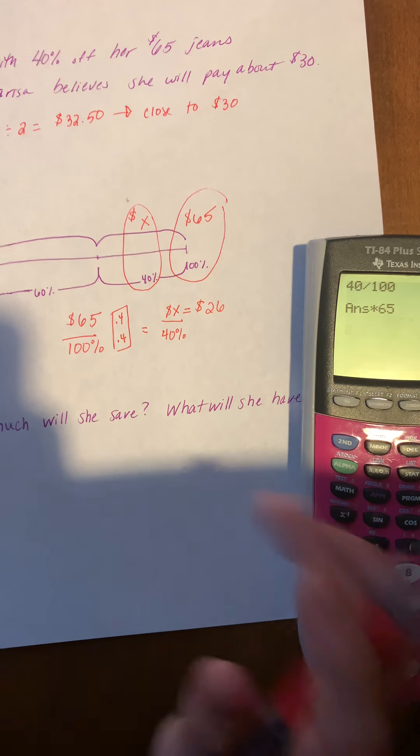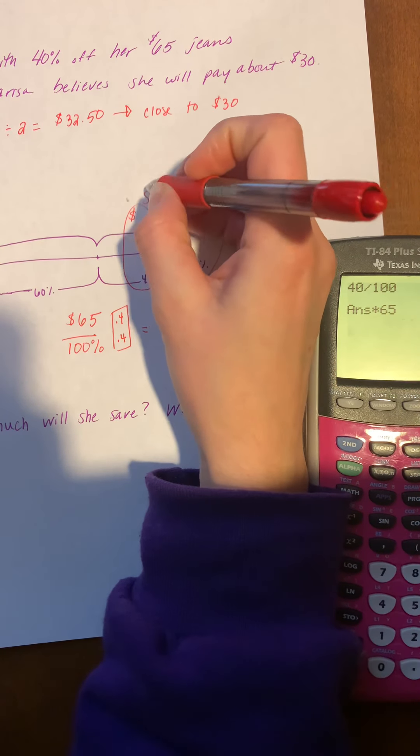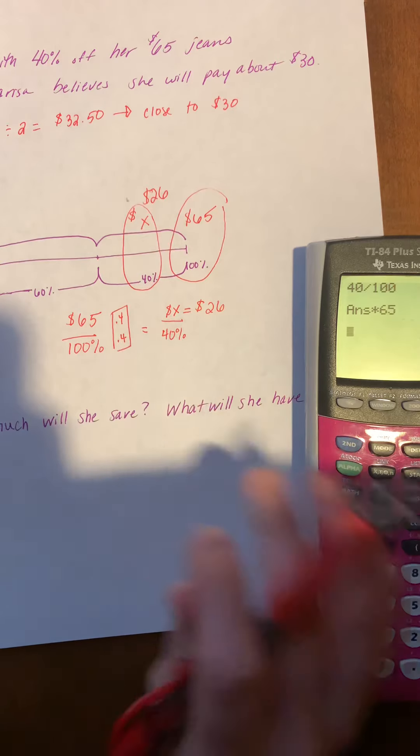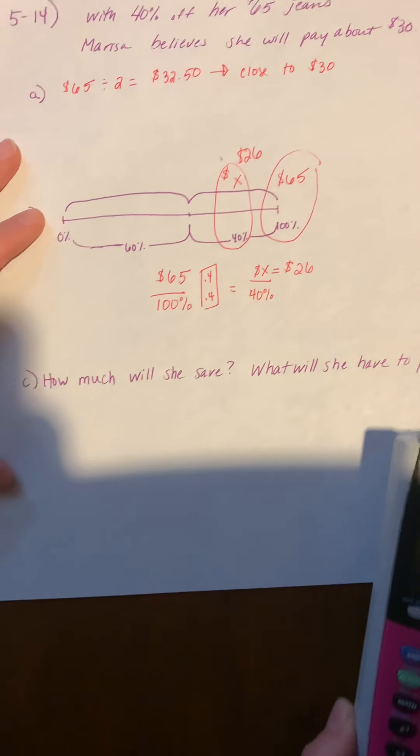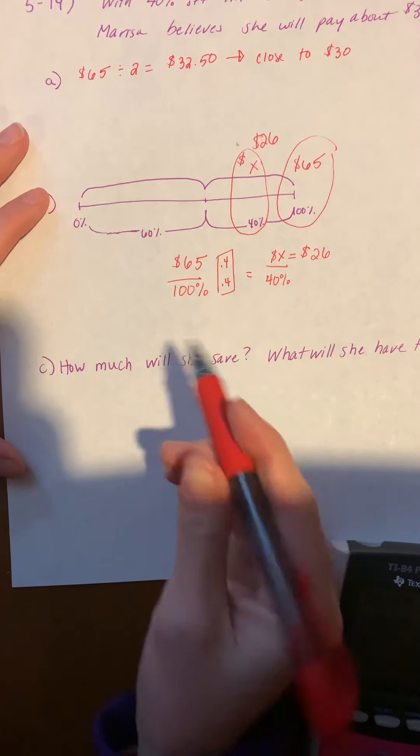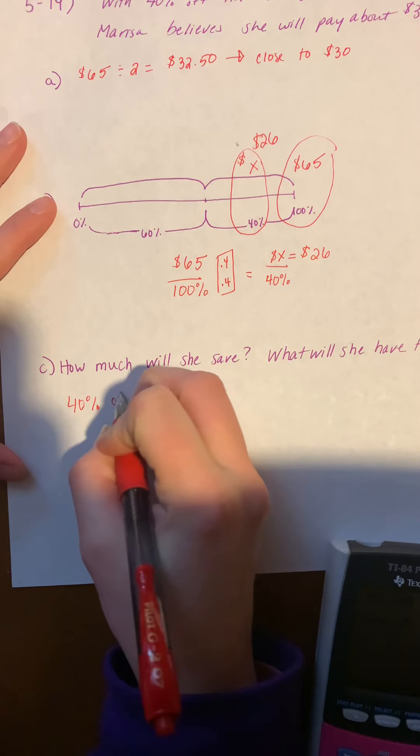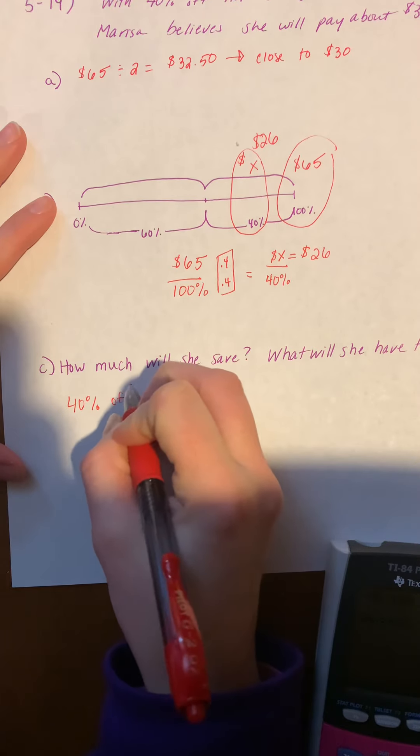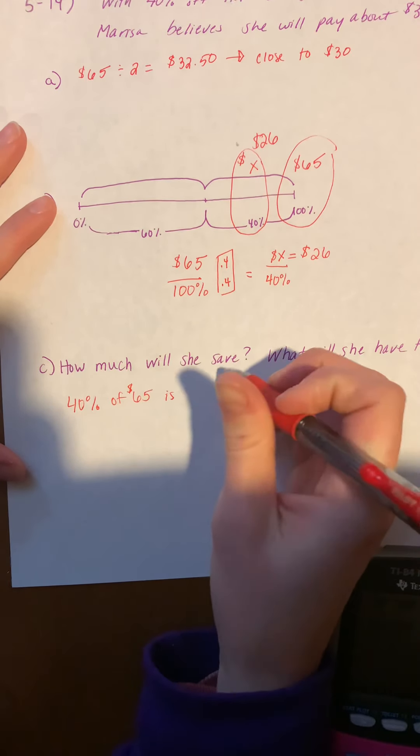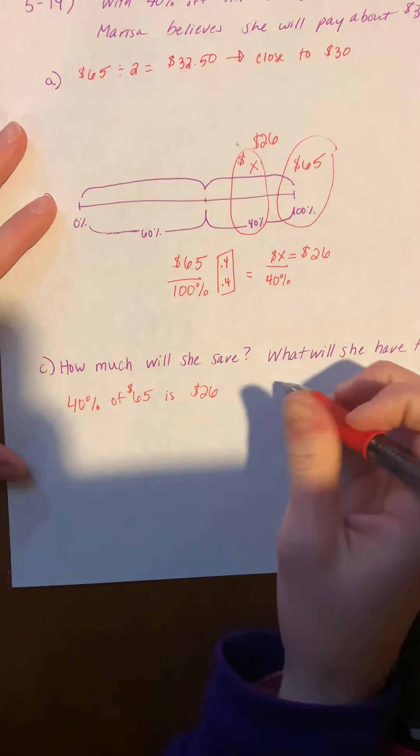So what does X represent? X represents what that discount is. So when we look down at Part C, how much will she save? Well, 40% of that $65 is that $26. So that's how much she's saving.